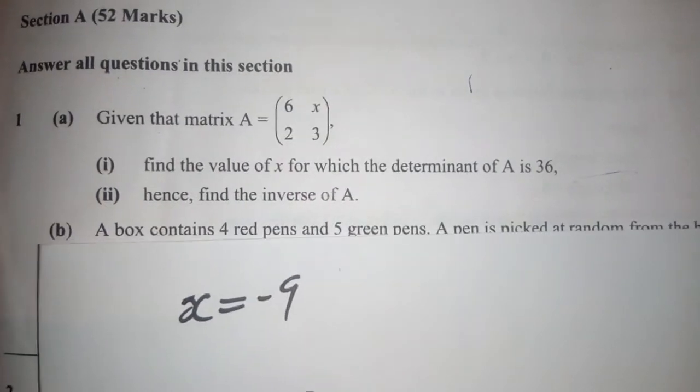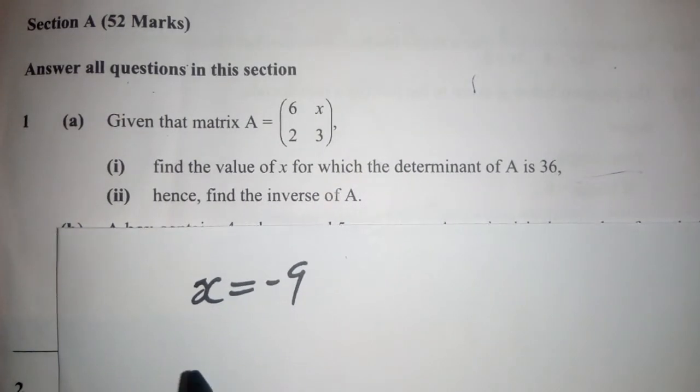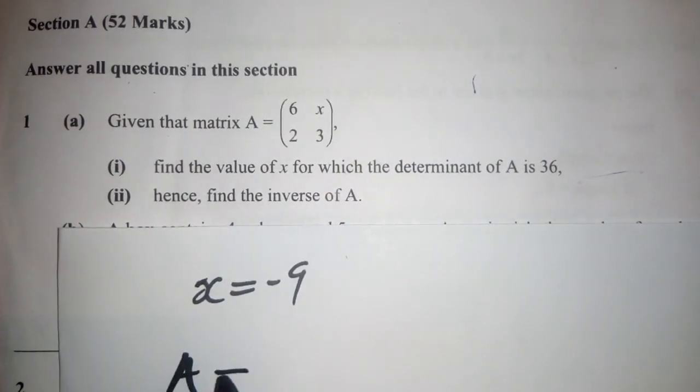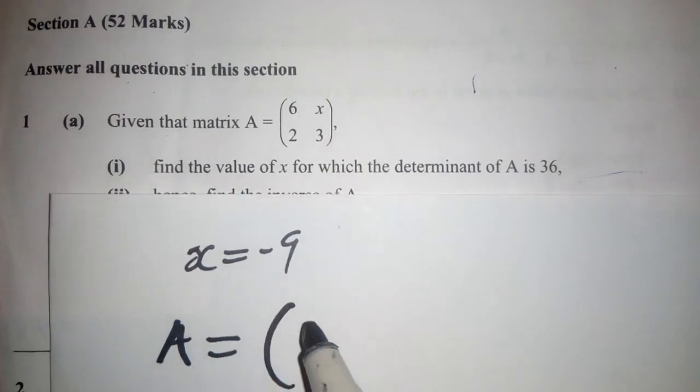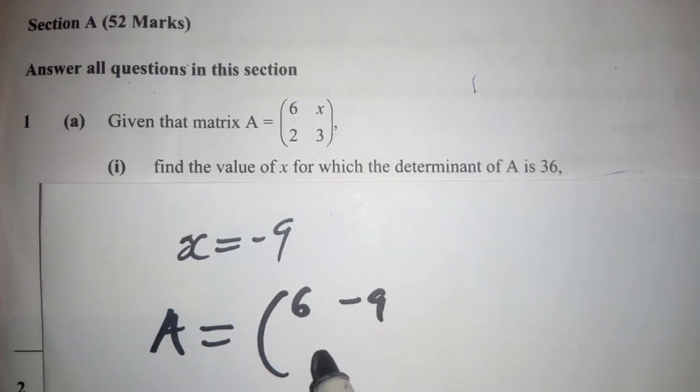So, in order for us to find the inverse of this matrix A, which is equal to 6 there, on x we put negative 9.